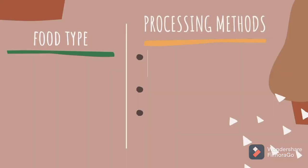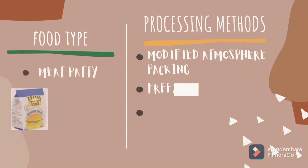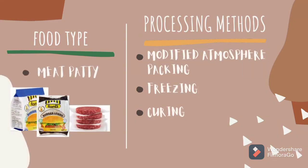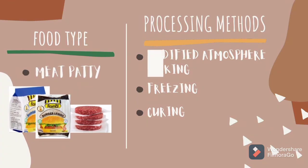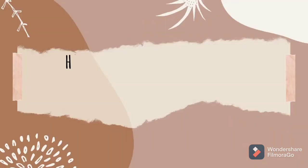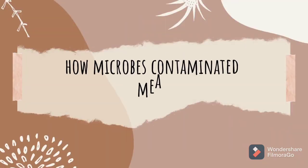The food type chosen is meat patty. The processing methods of meat patty include modified atmosphere packing, freezing, and curing. Next, how do microbes contaminate meat?